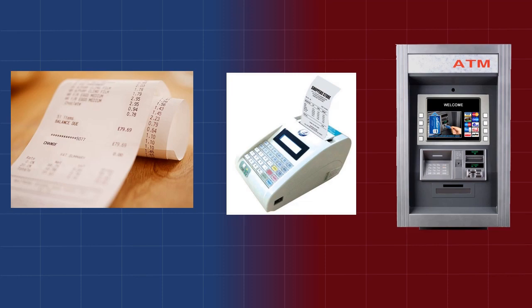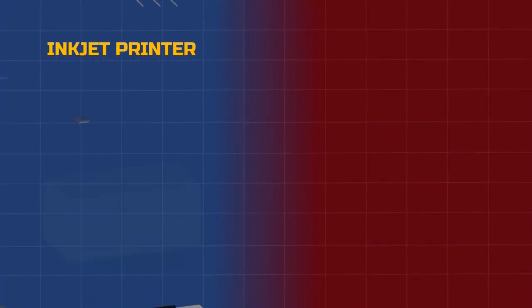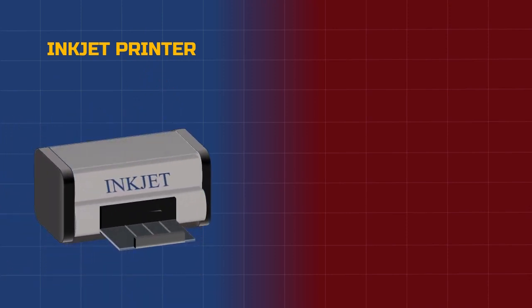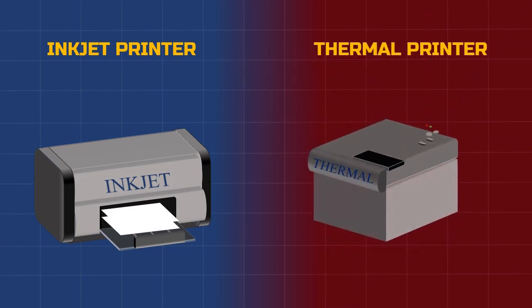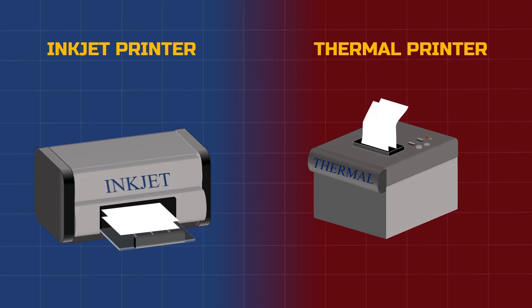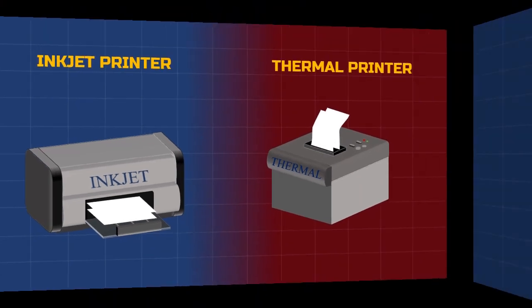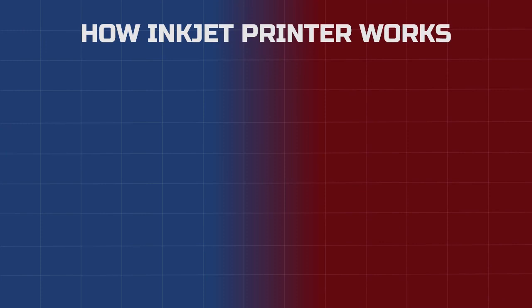The print on this paper starts to fade away after some time — why is that so? What you see here is a normal inkjet printer, used for daily purposes, and the second is a thermal printer, which is used in supermarkets and ATMs for printing those slips.